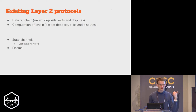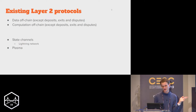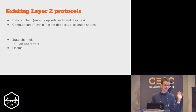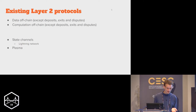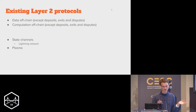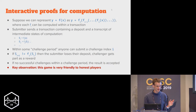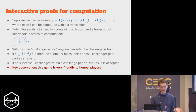So state channels: data off-chain, computation off-chain. The Lightning Network: data off-chain, computation off-chain. Plasma: data off-chain with the exception of one root every minute or so, and computation off-chain. This is the status quo of layer two protocols — basically trying to off-chain everything to gain larger scalability.